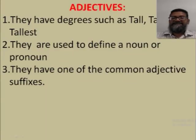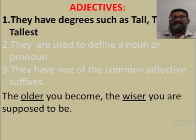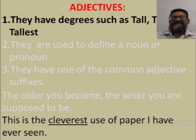Now let's move to adjectives. Adjectives have three identifiers. First, they have degrees of comparison — tall, taller, tallest; high, higher, highest. For example: 'The older you become, the wiser you are supposed to be.' Older and wiser are comparative forms of old and wise, and we can have oldest and wisest. Words that have three degrees of comparison are adjectives. 'This is the cleverest use of paper I have seen.' Cleverest is the superlative form of clever — so it's an adjective.